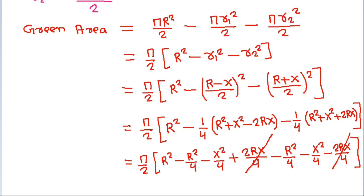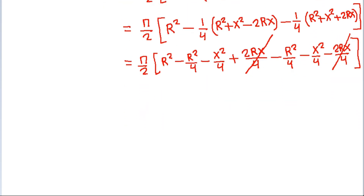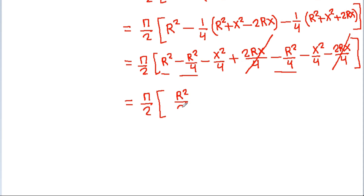After expanding, the 2RX/4 terms cancel out, and it is (π/2) times: R² minus R²/4 minus R²/4 gives R²/2, and minus X²/4 minus X²/4 minus X²/4 gives minus X²/2.